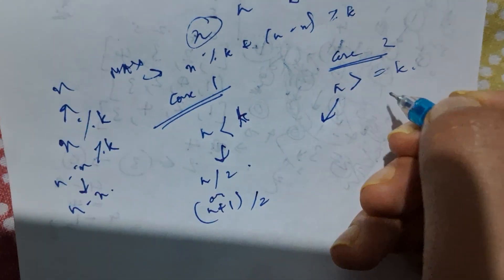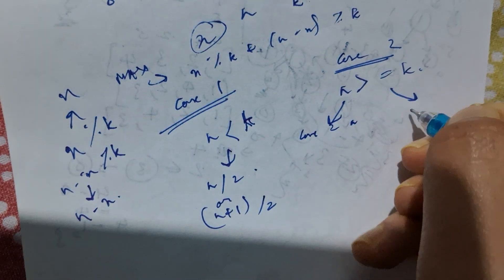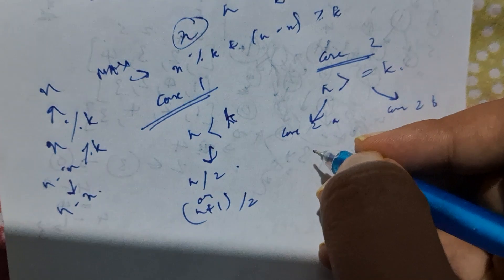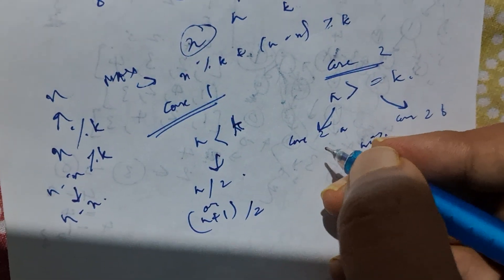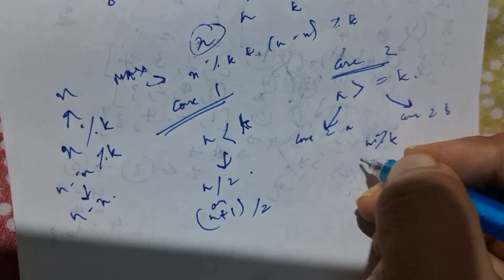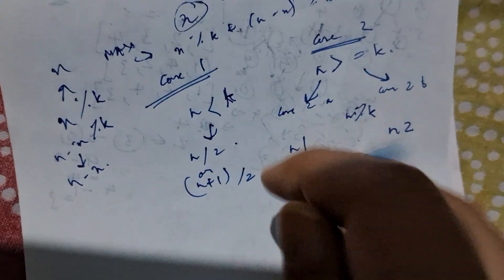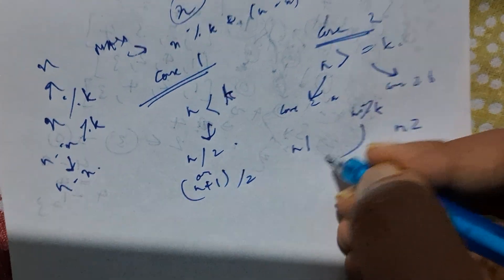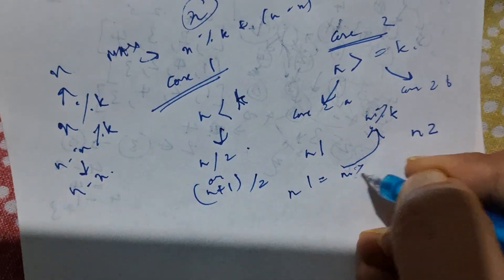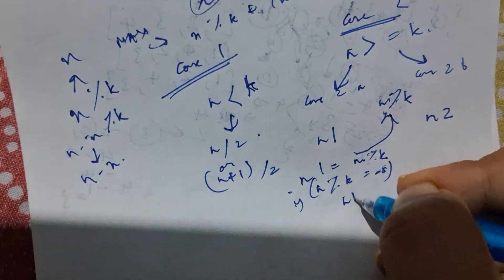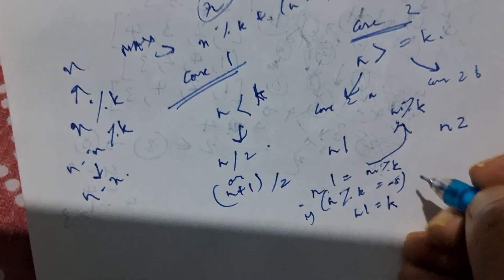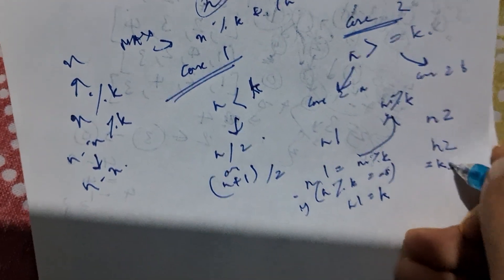Now Case 2 is when n is greater than or equal to k. Here you get two sub-cases: Case 2a and Case 2b. For this, you define a variable n1 and n2. n1 is equal to n mod k. But if n mod k equals 0, then n1 becomes k. And n2 is equal to k plus n mod k.